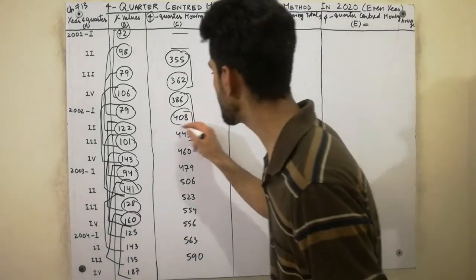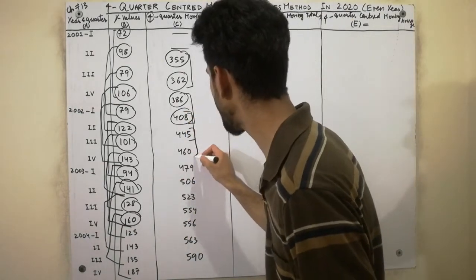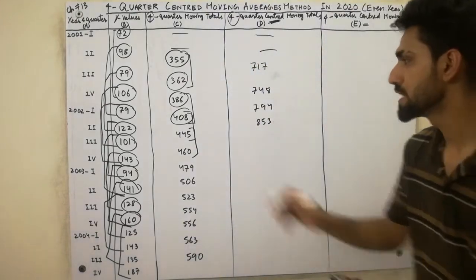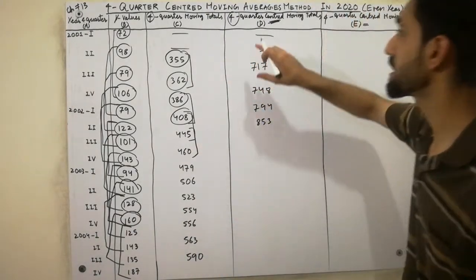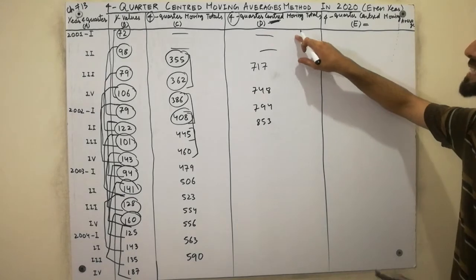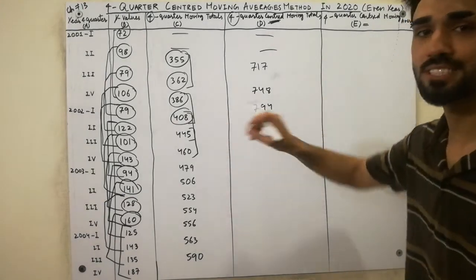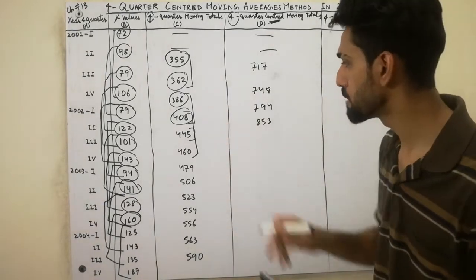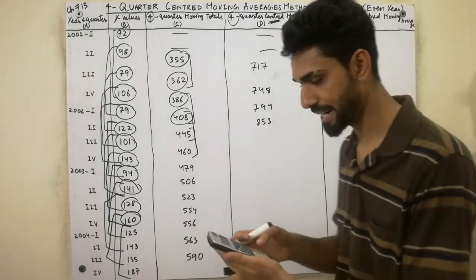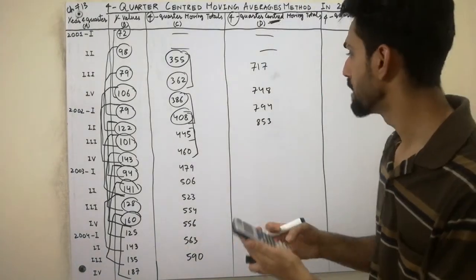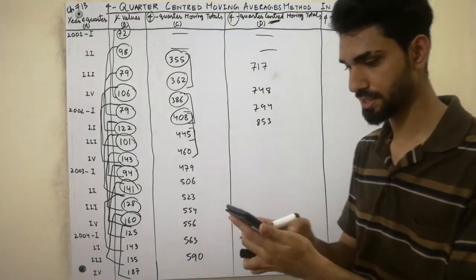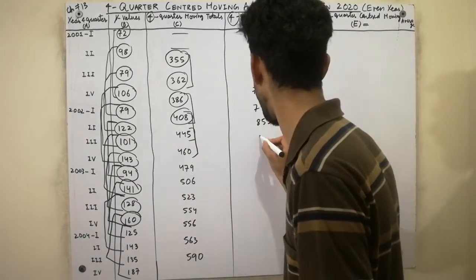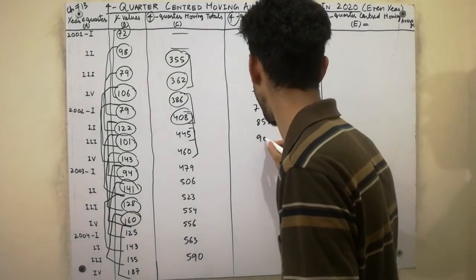Now we leave that value. Next we again add up the next two values — double 445 — because I will indicate that the 4 at the center. We add up the centered two values: double 445 plus 460. That value is 905.